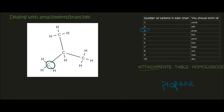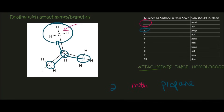But now let's say we choose this chain here as our longest chain. Then on carbon number two, we've got a branch — this part here is the branch, or the attachment. Now, how many carbons are there in the branch? That's one, so that's meth. But because it's a branch, you have to add the word methyl. And between any word and any number, you always put a line.